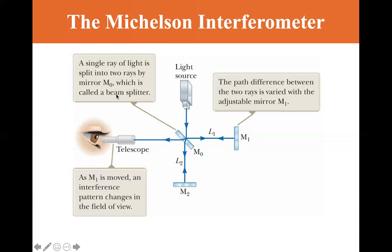So let's read the boxes. A single ray of light is split into two rays by mirror M0, which is called a beam splitter. The path difference between the two rays is varied with the adjustable mirror M1. So you move it back and forth in this direction. As M1 is moved, an interference pattern changes in the field of view.